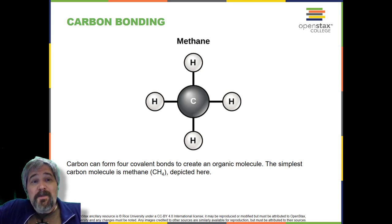Carbon Bonding. Carbon contains four electrons in its outer shell. Therefore, it can form four covalent bonds with other atoms or molecules. The simplest organic carbon molecule is methane, in which four hydrogen atoms bind to a carbon atom.